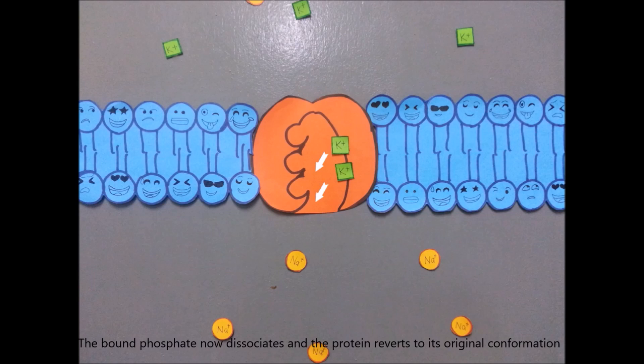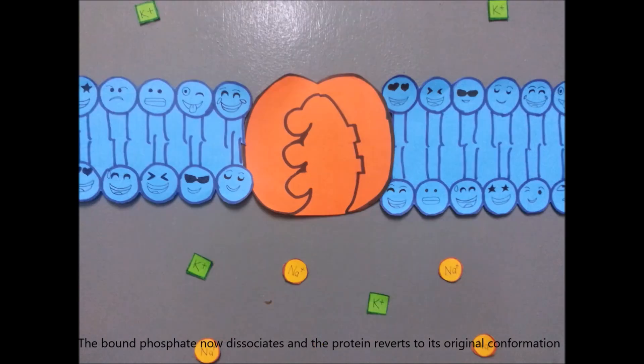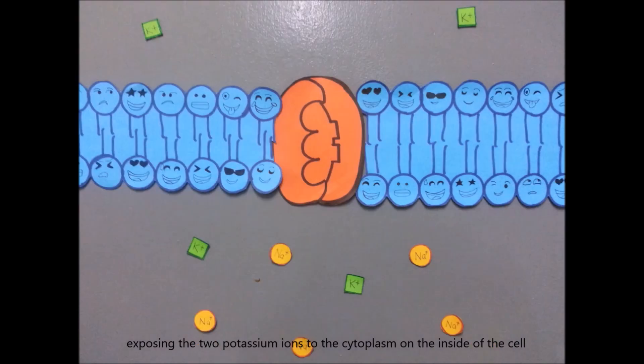The bound phosphate dissociates and the protein reverts to its original conformation, exposing the potassium ions to the cytoplasm on the inside of the cell.